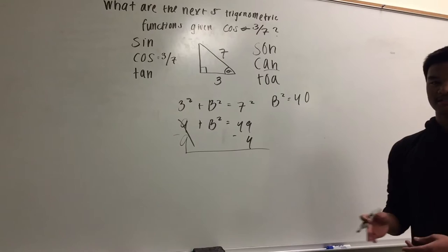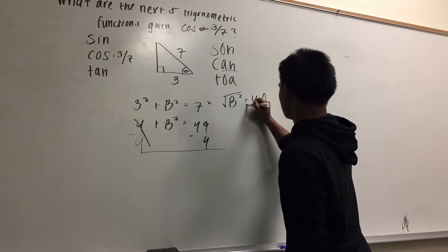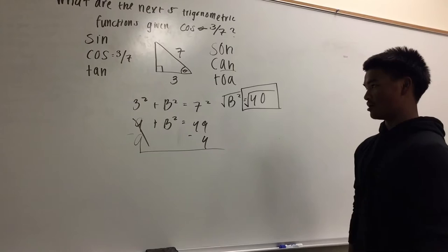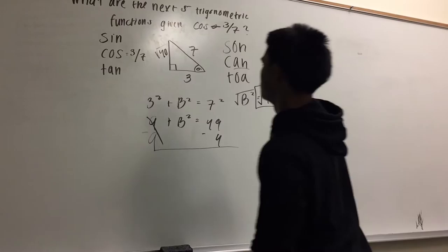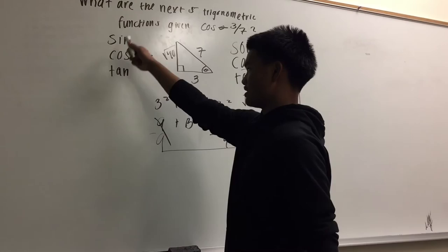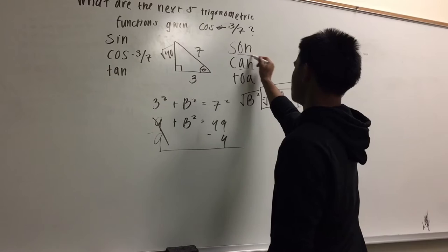Now, square root of 40 is not going to come out even. So, what we're going to do is, just going to do this, and leave it as B squared, B. So, we're going to put over here, square root of 40. Now, now, we can fill in sine and tangent. So, for sine, opposite over hypotenuse.